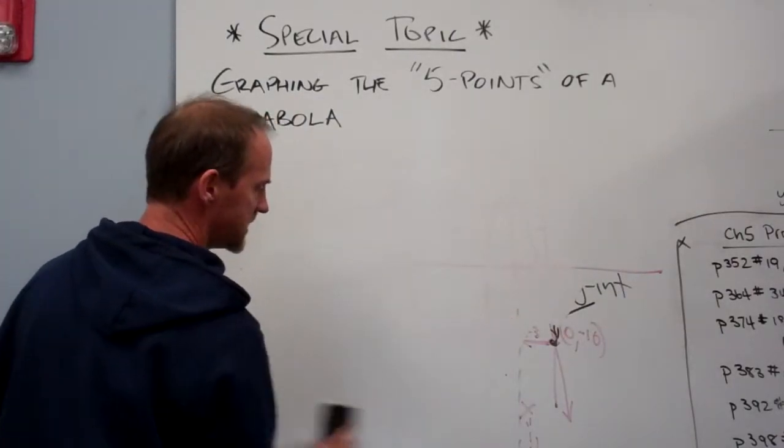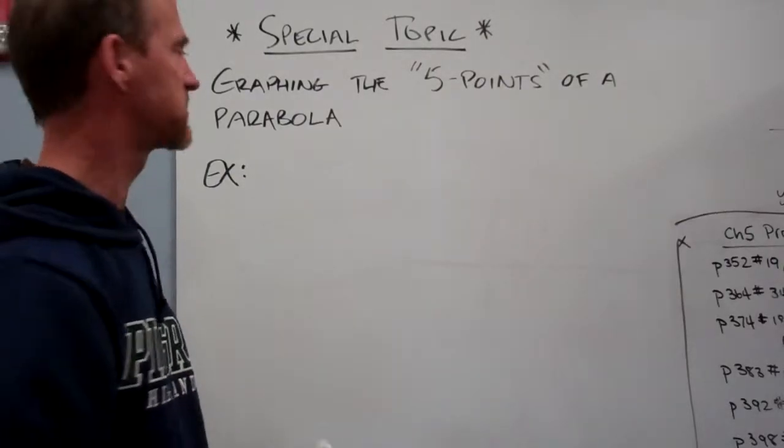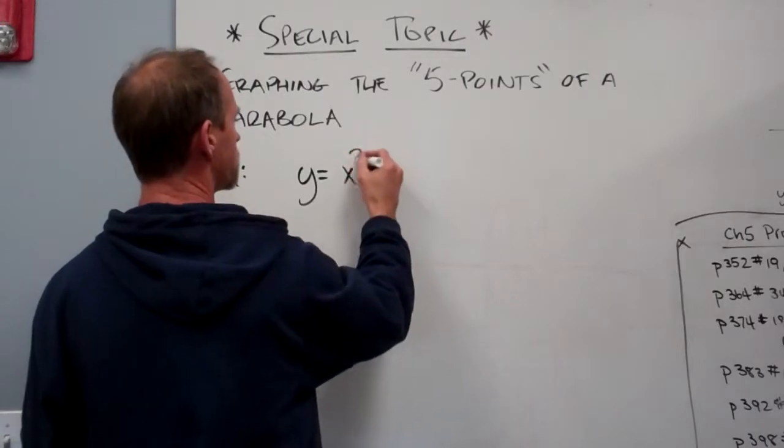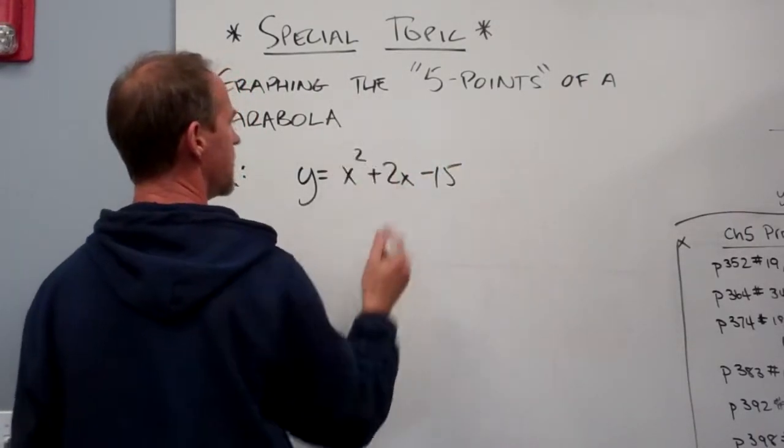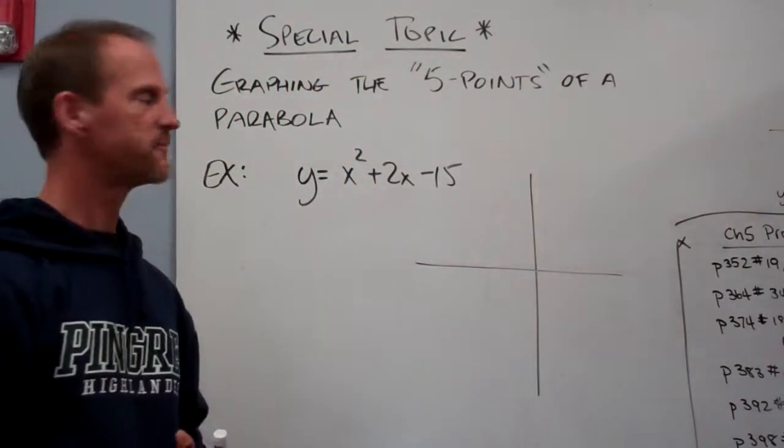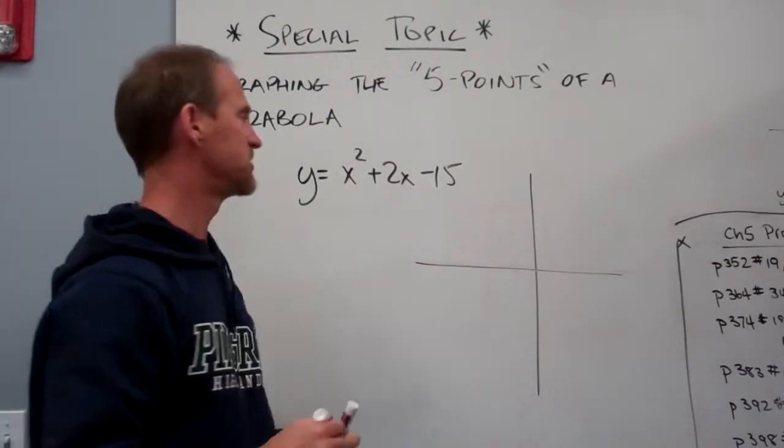Alright, this is one where it's not in vertex form, and we want to find those same five points. So let's say we've got y equals x squared plus 2x minus 15. And again, I'll draw my coordinate system. How do I find the vertex? Well, this goes back to the very first section of this chapter.